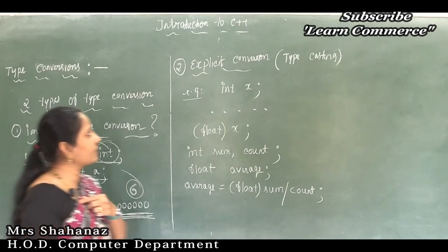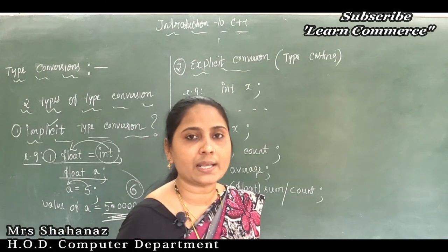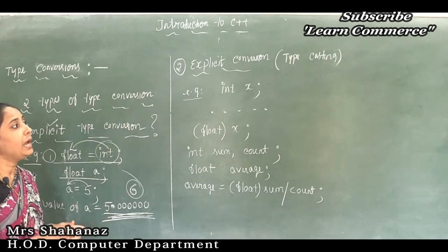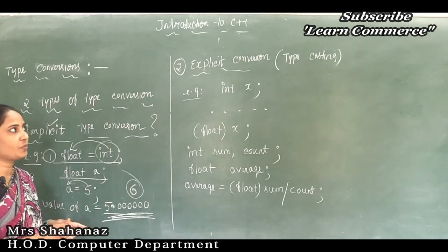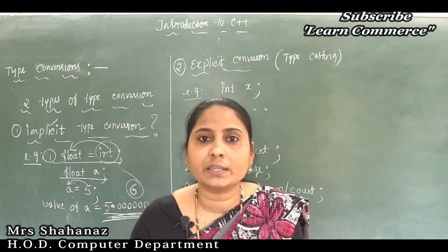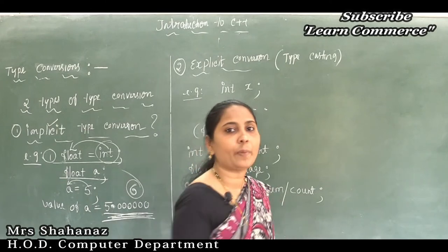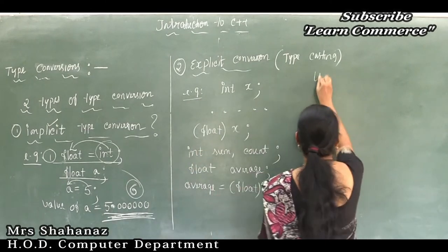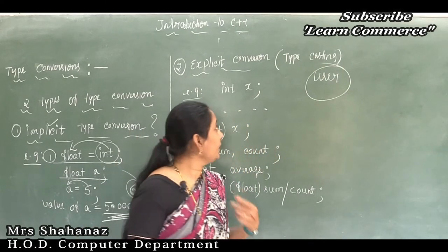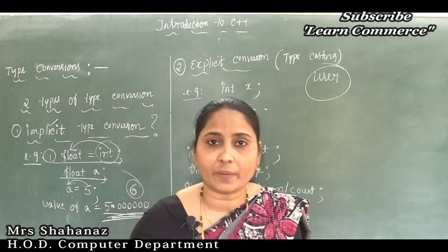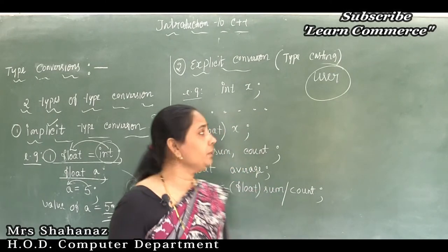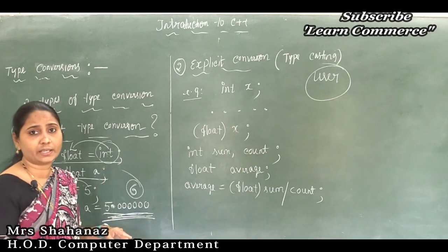The next type is explicit type conversion, also called typecasting. This type of conversion is performed by the user — not by the compiler. The user explicitly changes the data type from one type to another.